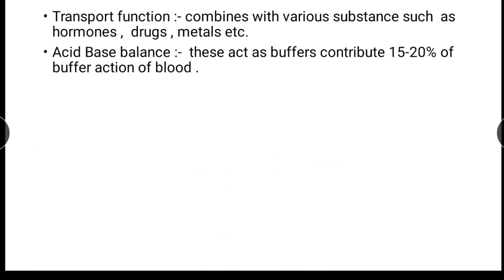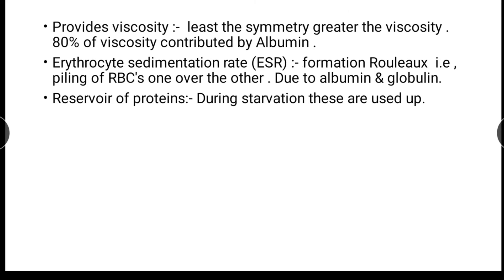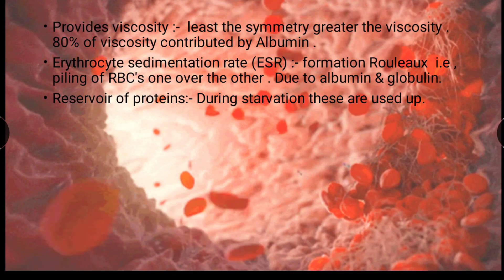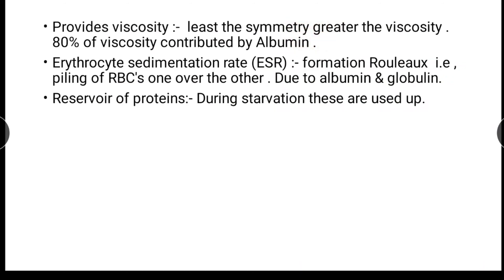Transport functions: these proteins combine with various substances like hormones, drugs, metals, etc. Plasma proteins maintain the pH of blood by buffering action, providing 15 to 20% of the total buffer action of blood. They also provide viscosity that maintains normal blood flow and cell stability. The less the asymmetry of proteins, the greater the viscosity, and 80% of viscosity is contributed by albumin.